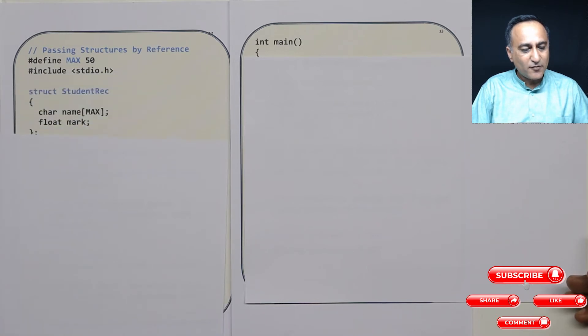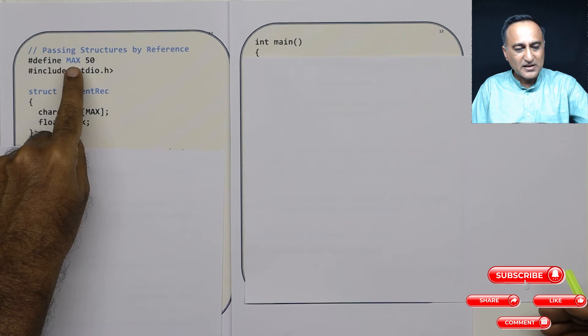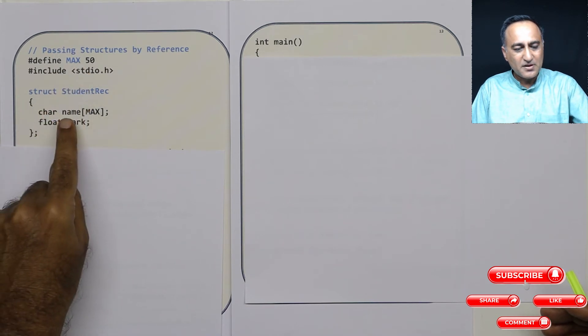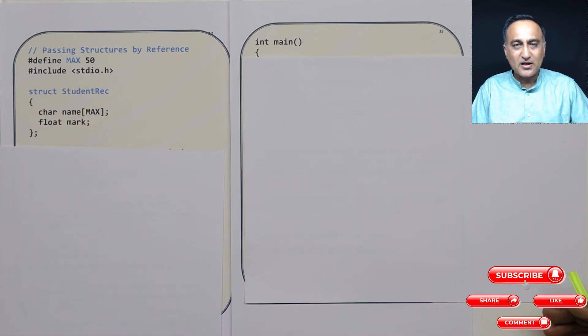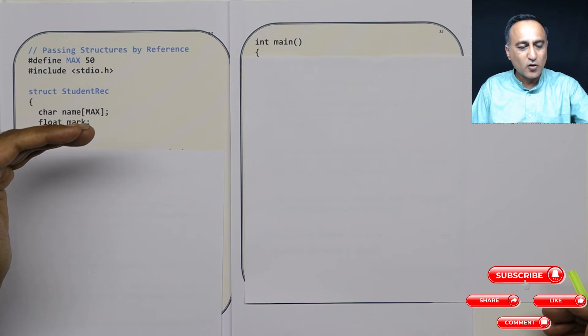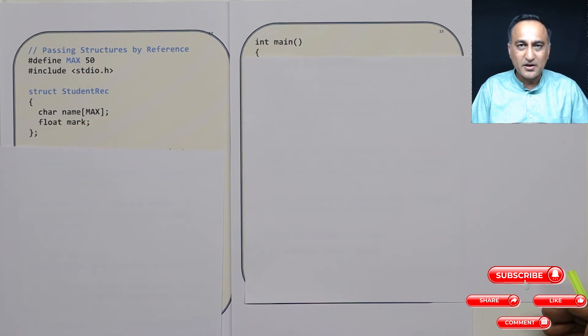So what I have done is I have defined student record. We are carrying on using the student record because continuity makes it easier to understand. Maximum capacity 50, that means the name can have 50 characters. I have marks as float. So let us assume I want to pass this student record structure as a parameter by address or reference to some other function.